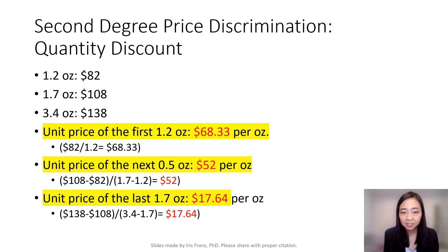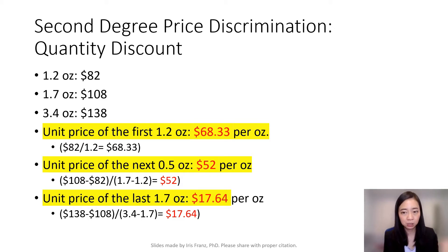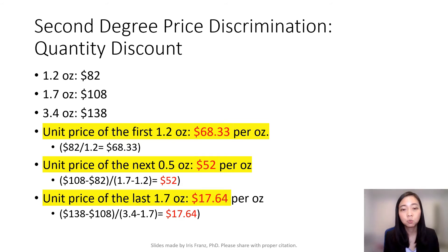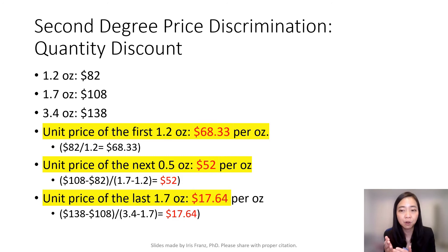What about the next 0.5 ounce? Moving from small to medium, we are gaining half an ounce by paying $26 more — 108 minus 82 equals 26. So 26 divided by 0.5 gives you $52 per ounce. That's the unit price when moving from small to medium.